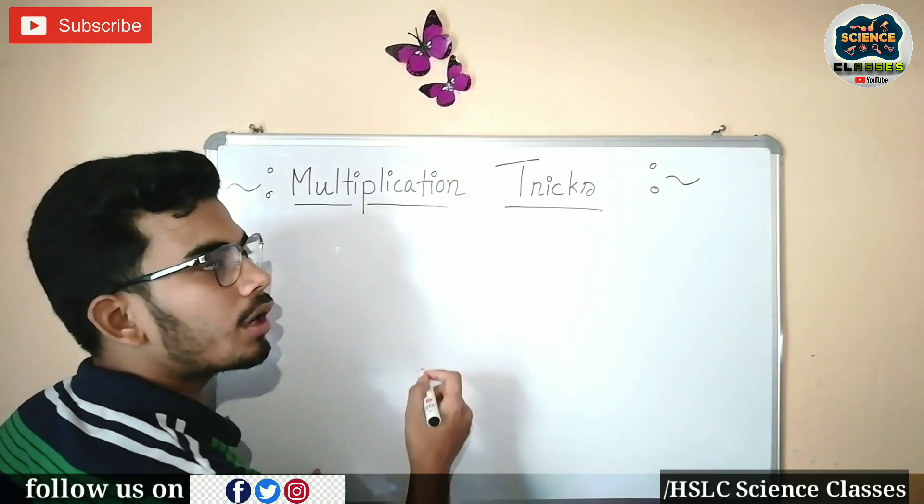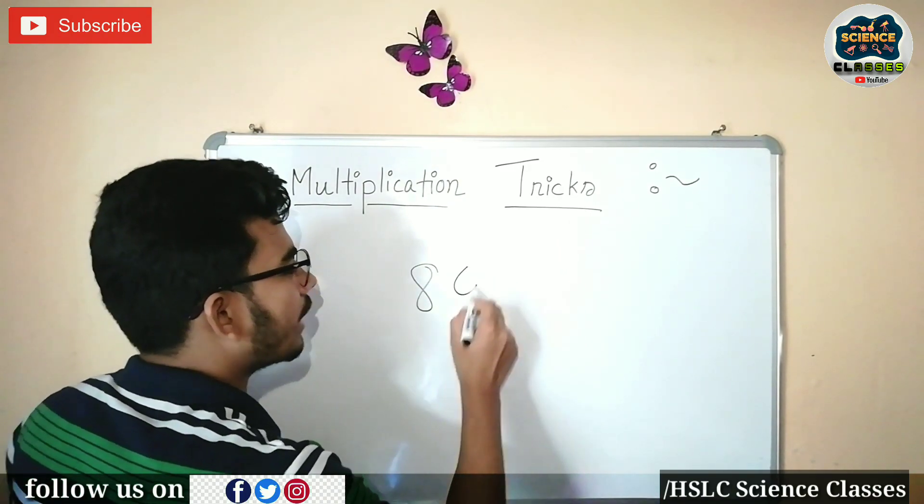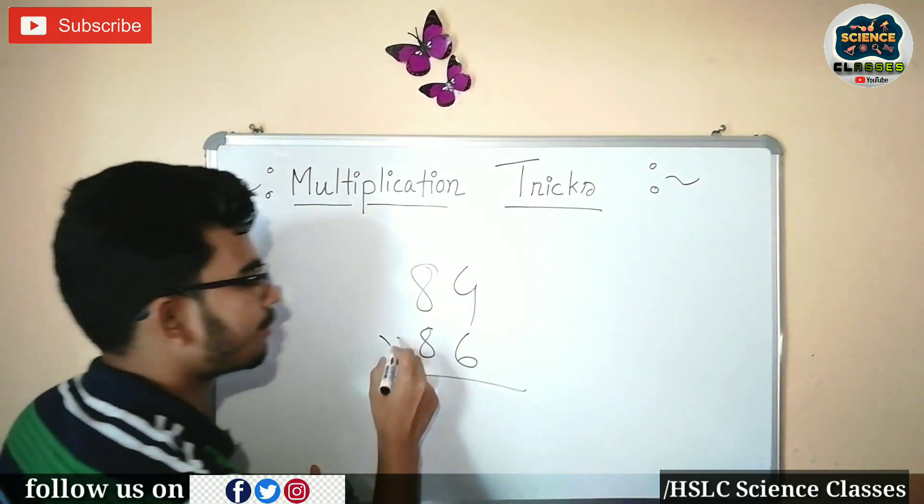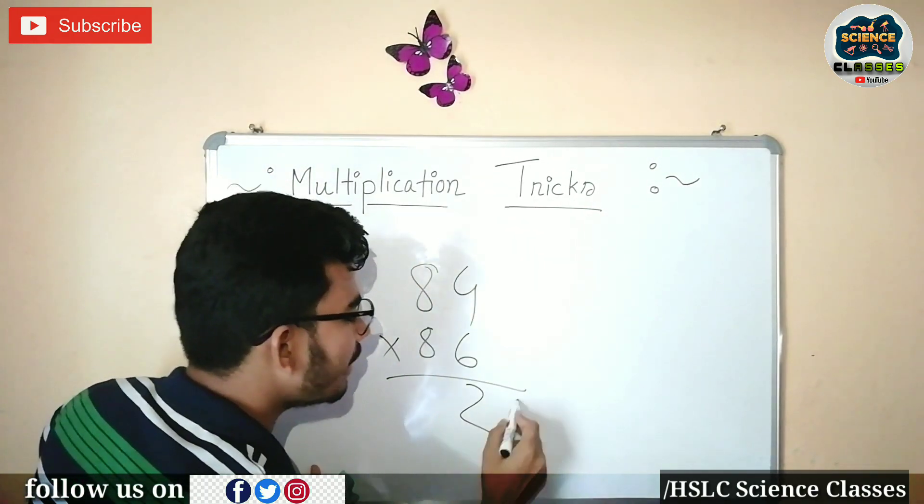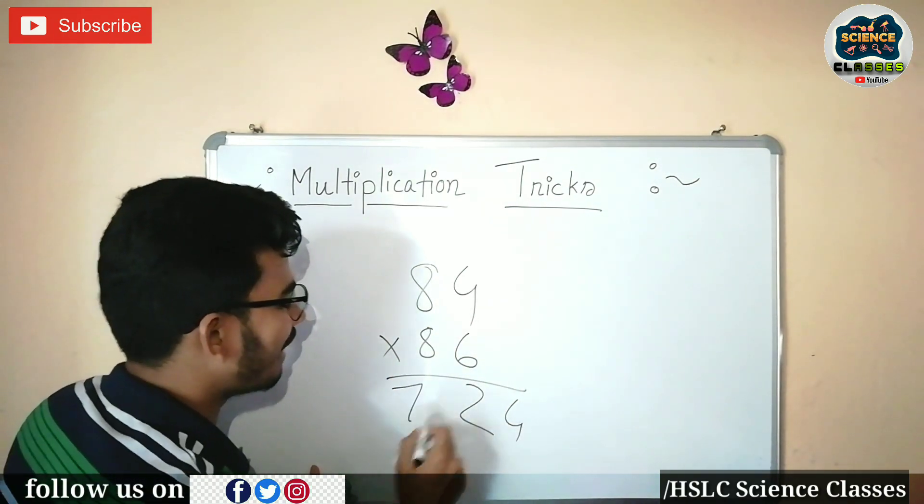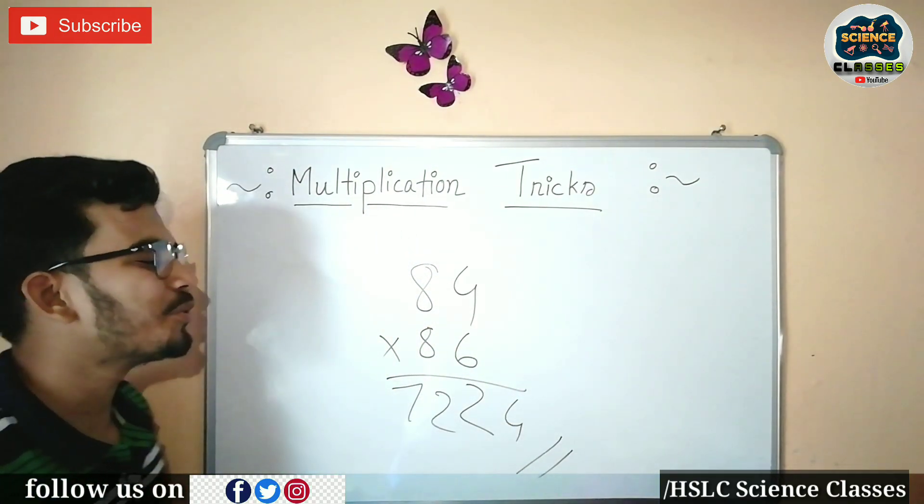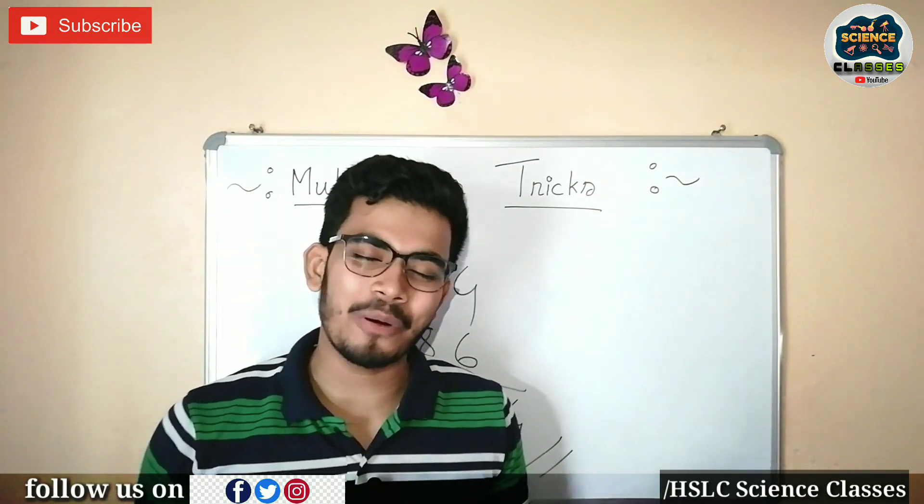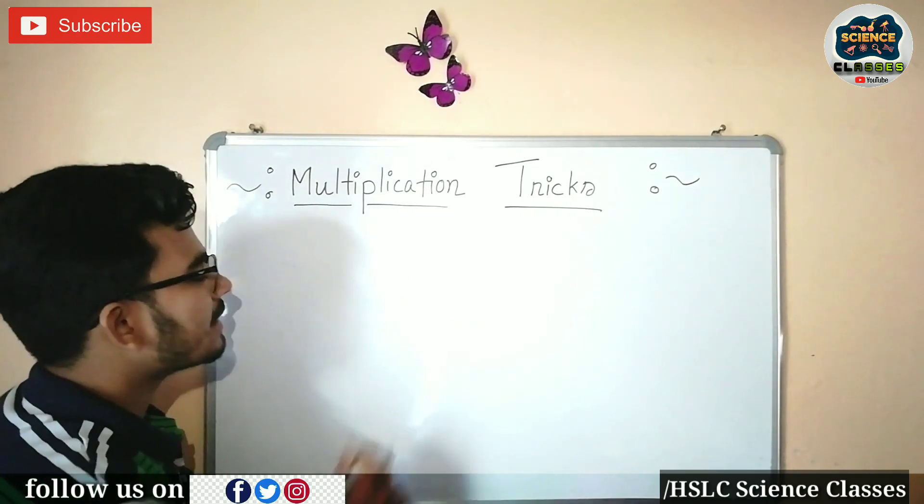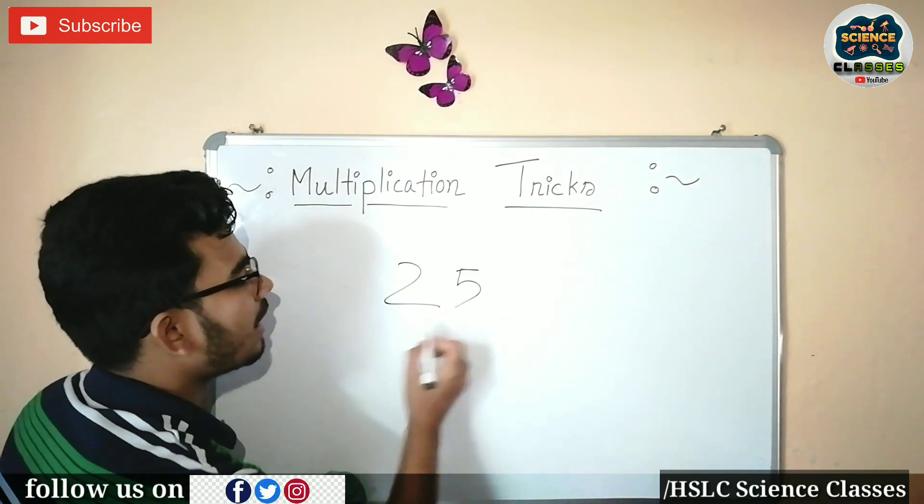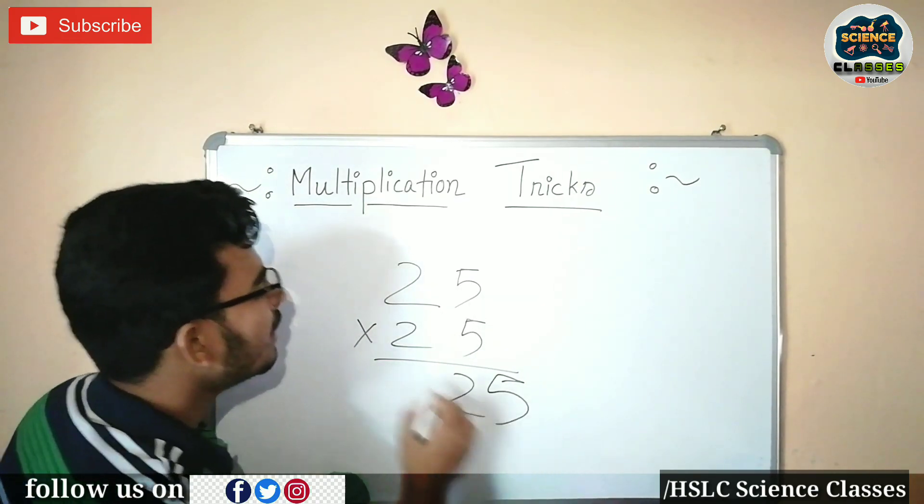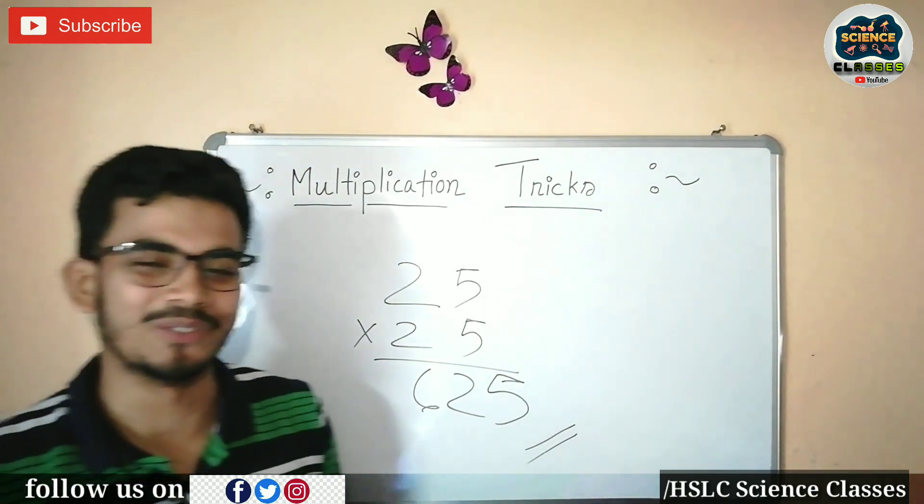This means the next example: 25 times 25. What do you do? 5 times 5 is 25, then 6 times 6 is 25. That's it, the answer is 625.